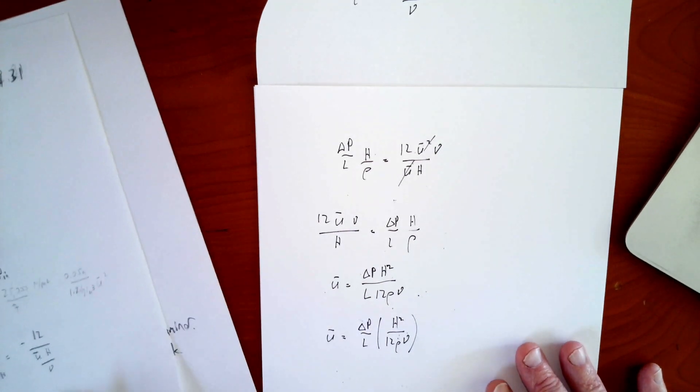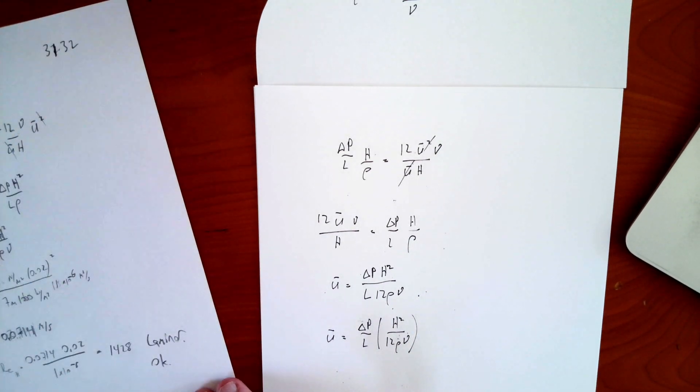Let's see, hopefully I got all that right. Looks pretty good delta p h squared l rho nu. What happened to my 12? There's my 12. Yep, that looks fine.